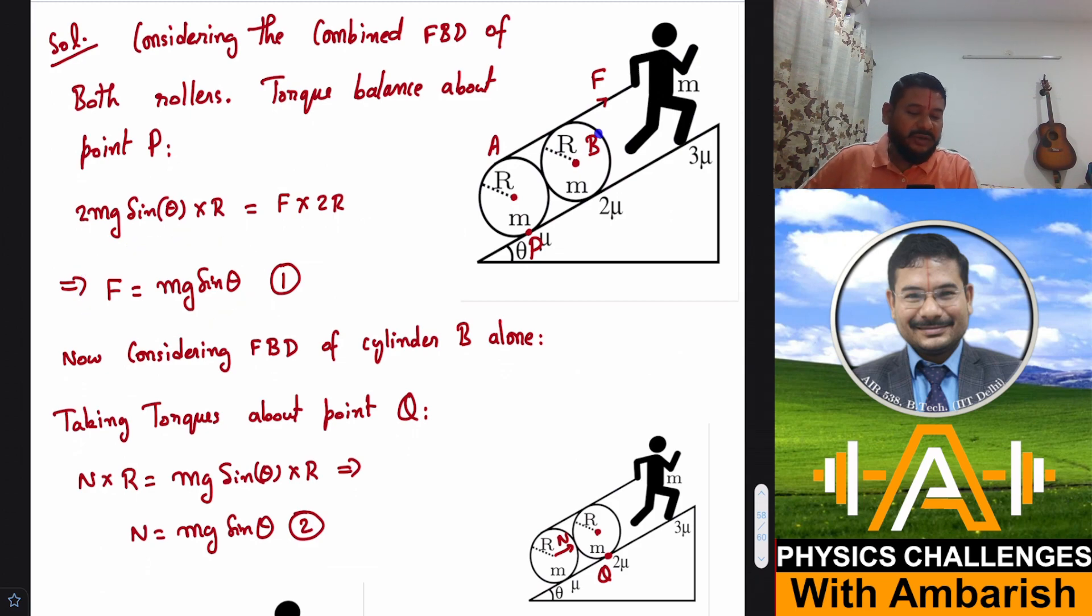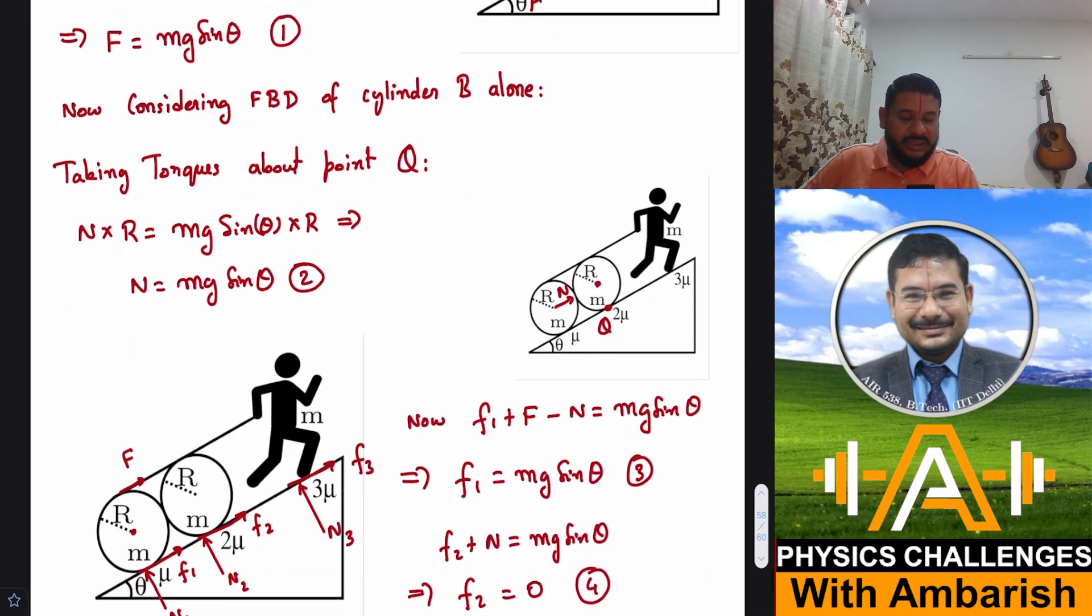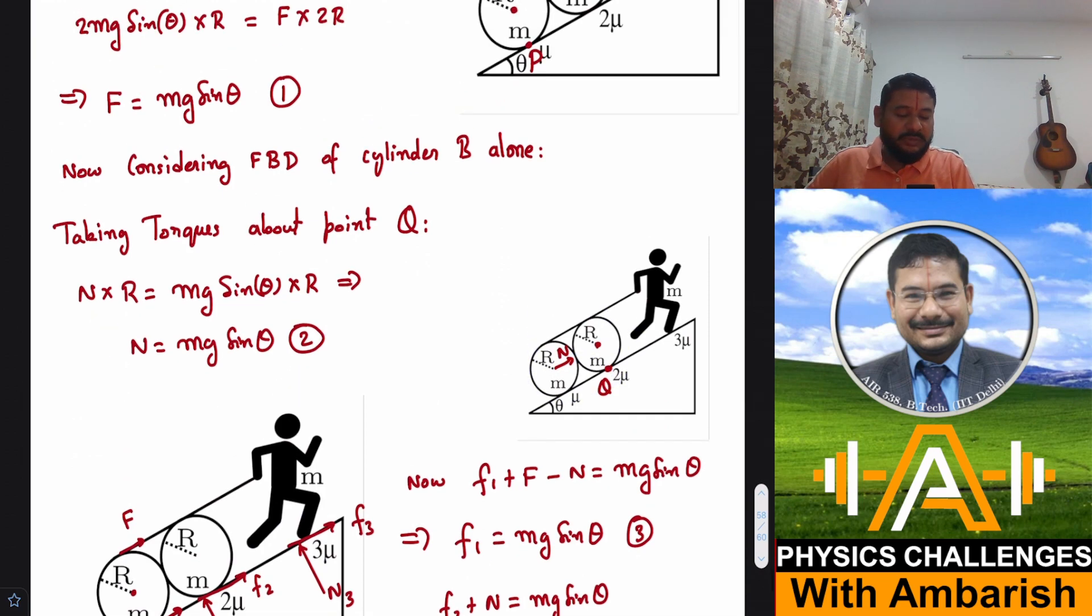Now I can find the normal reaction between the cylinders by considering the FBD of cylinder B alone. If you look at roller B, this is normal reaction N and there's mg sin θ. Taking torque about the bottom most point, N into R equals mg sin θ into R. So normal reaction is also mg sin θ.